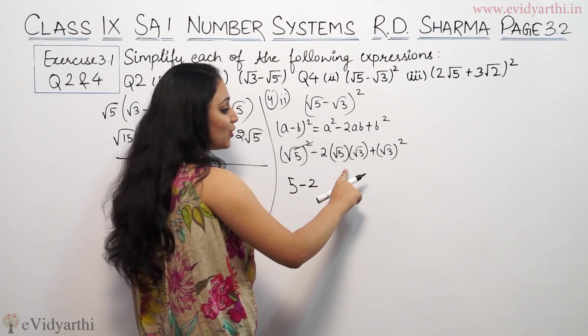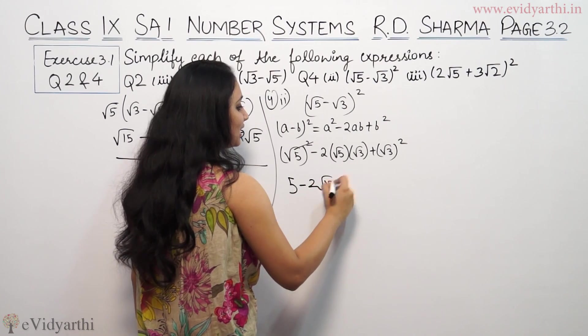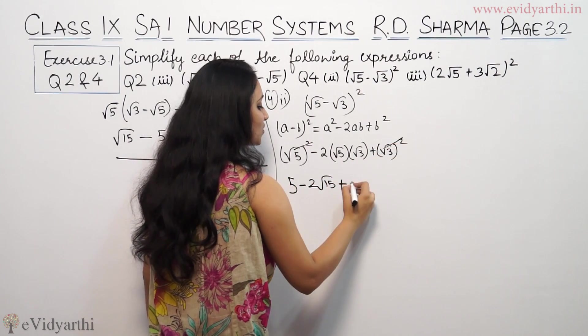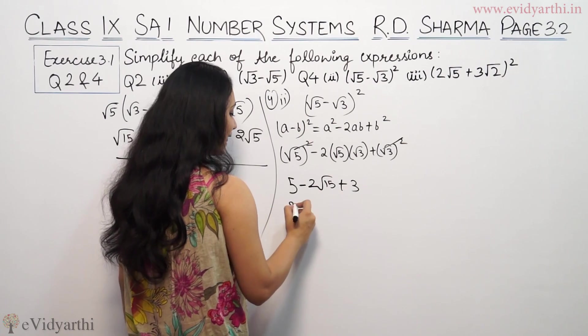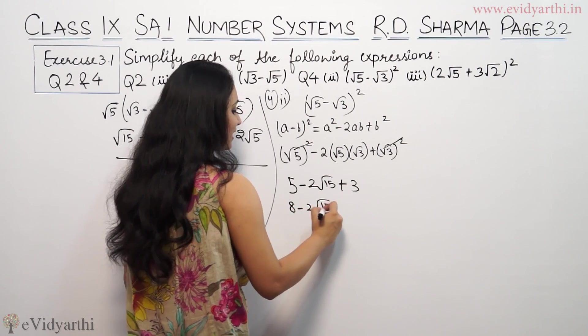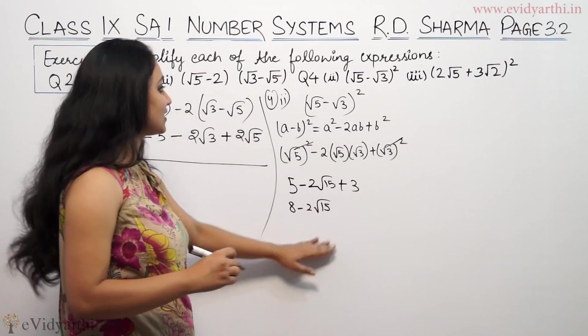Minus 2 into √5 into √3 is √15, plus (√3)² is 3. So 5 + 3 is 8 minus 2√15. So this is the answer.